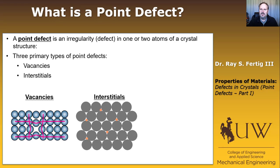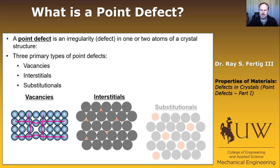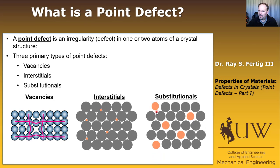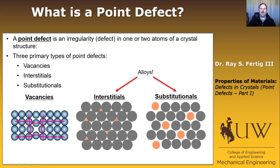The final category of point defects are called substitutionals, where an atom replaces another atom in the crystal structure. These are actually very common, and in fact, in metals, that's how we get alloys.